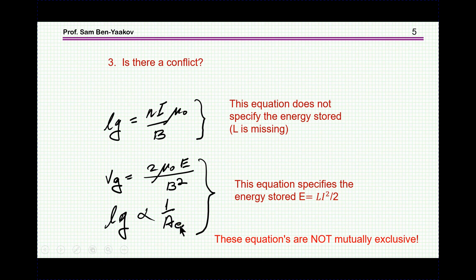And therefore, this formula is correct for any shape of a core. Change the shape. This will always be correct. If you take a flat magnetic core with a much larger A sub E cross section area, then LG would be smaller because of this relationship. These two equations are really not mutually exclusive.